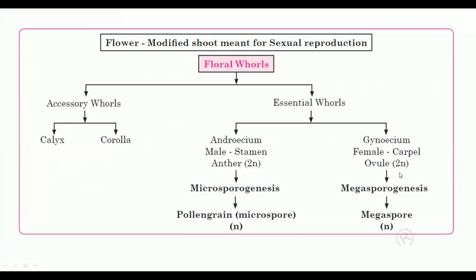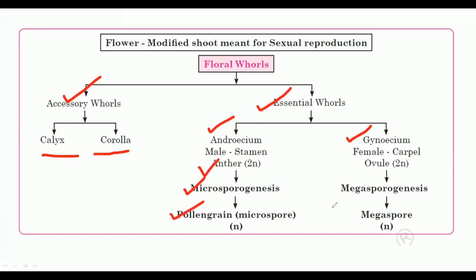The next topic is floral organs. There are essential floral organs. The essential floral organs are androecium and gynoecium. Androecium is the male stamens — there are anthers — and there are cells in the process of pollen grain formation. Gynoecium refers to the carpel or pistil.